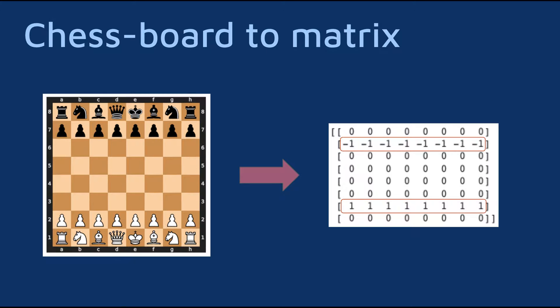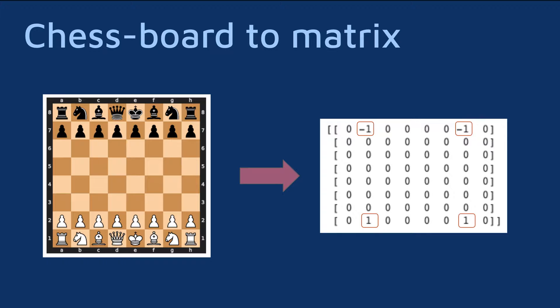For example, for the starting board, the first map representing pawns will look like this, while the second one representing knights will look like this. Now let's see how we can transform the raw Kaggle dataset into this type of representation.